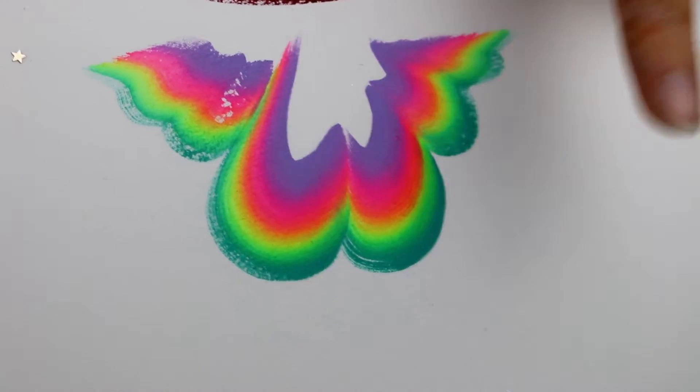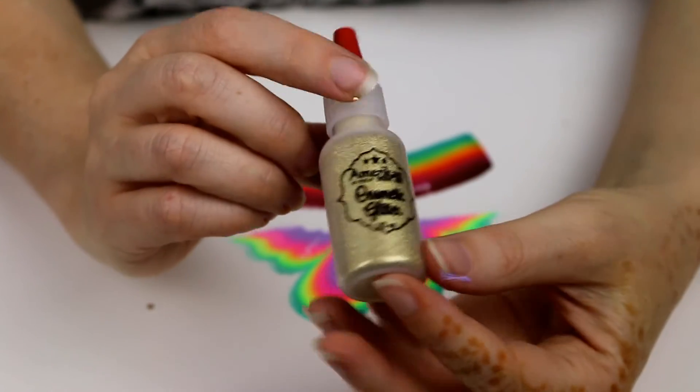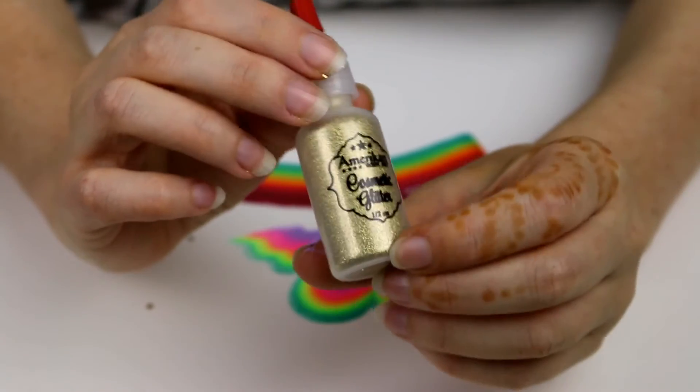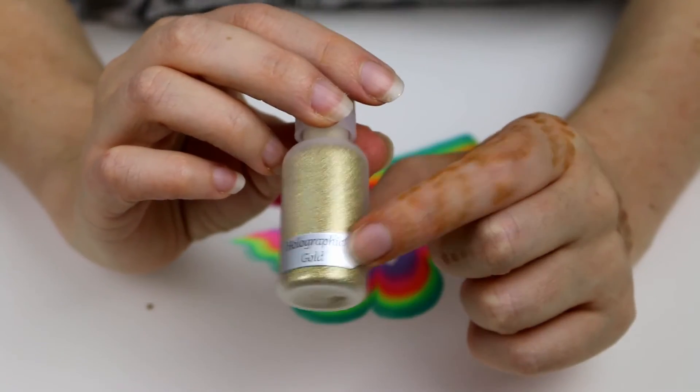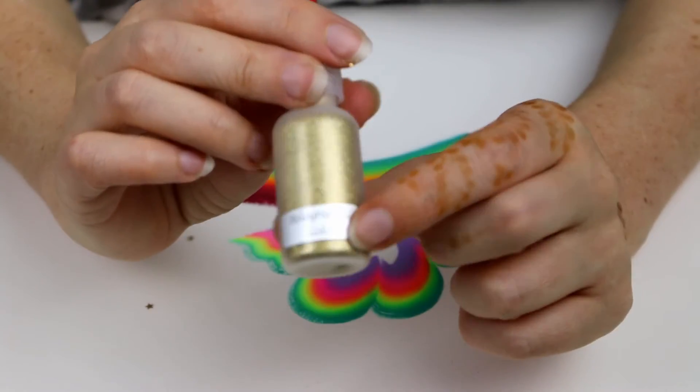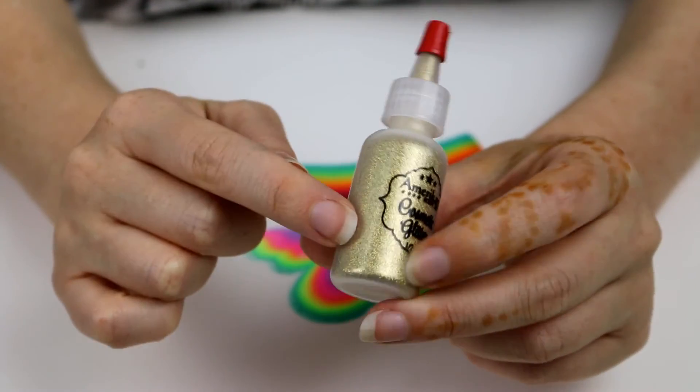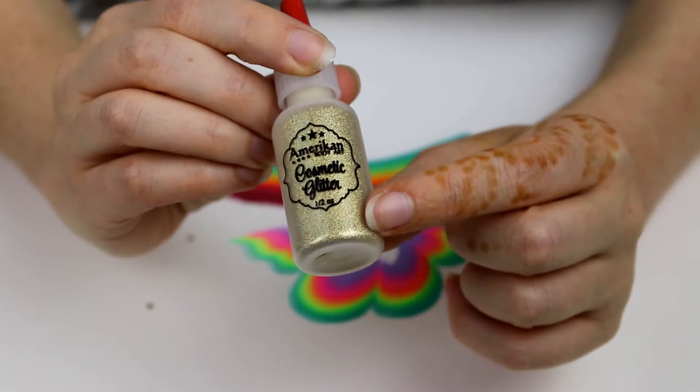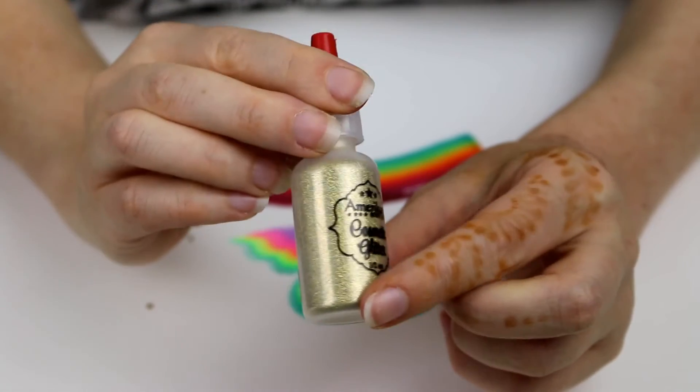Next up is the American Body Art cosmetic glitter. This is a really finely milled glitter in holographic gold. Holographic means that it is one color but it also shines a rainbow. This looks really pretty in the sun.